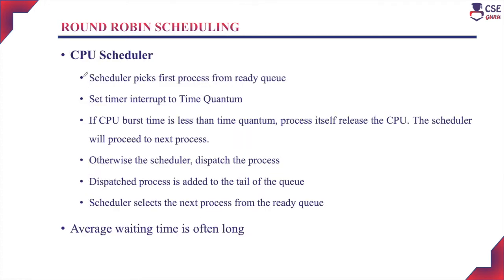This is the working of the CPU scheduler in the Round-Robin scheduling algorithm. Initially, the scheduler picks the first process in the ready queue and sets a timer interrupt to the specified time quantum — the process must execute only for that time quantum. If the CPU burst time is less than the specified time quantum, the process will release the CPU and the scheduler proceeds to the next process. Otherwise, if the CPU burst time is more than the time quantum, the scheduler will preempt the process once the time quantum is over. The preempted process is added to the tail of the queue, and then the scheduler selects the next process from the ready queue. This procedure continues for each subsequent process.